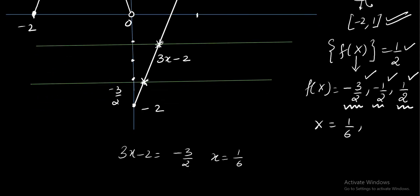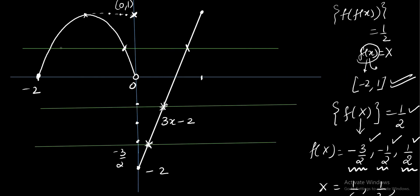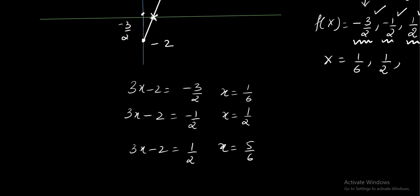Now for f(X) equals 1 by 2, when the function takes the value 1 by 2, what are the possible values of X? I can see there are 3 values of X which I need to find out, solving it with the quadratic and with the linear. When we solve with linear, 3X minus 2 equals plus 1 by 2. When will it get this value? When you take X as 5 by 6. Similarly, I will be solving it with the quadratic also. What is the quadratic they have given? Minus X squared minus 2X equals 1 by 2. On solving this equation, I will get two answers. I am just naming those answers as X1, X2.